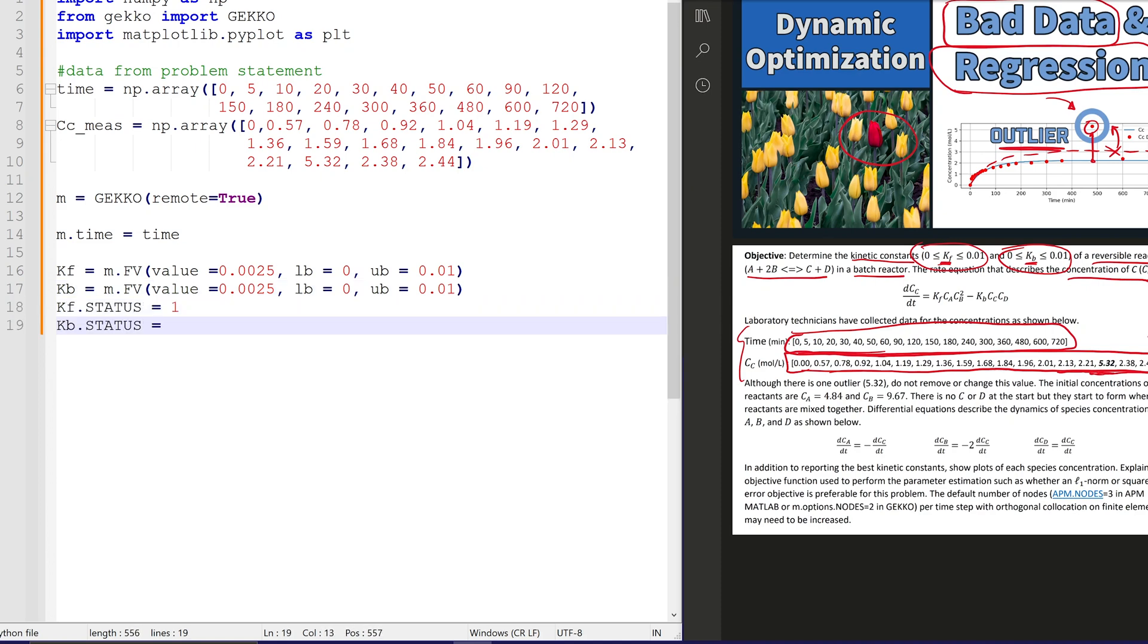We'll have a lower bound and upper bound value there. We'll turn the status on for those, and that makes it so the solver can adjust them. As FVs, there's only one value of those for the total time horizon. Here's our concentration of A and B with those initial values that we had. And then D, and then concentration of C as well.